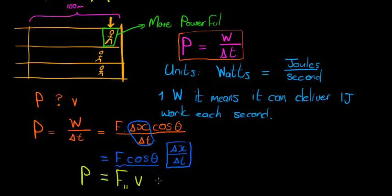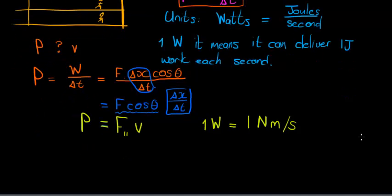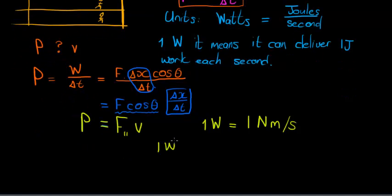Now again, that means that in this case, 1 Watt is equal to 1 Newton meters per second. Which, if I had to interpret this, 1 Watt means that the object is doing 1 Newton meters every second.